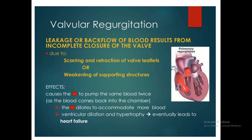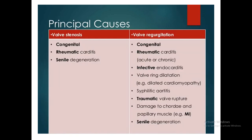Both stenosis and regurgitation can cause effects on the heart and from the heart to the whole body. The principal causes of stenosis are congenital defects, rheumatic carditis, and senile degeneration. As for valvular regurgitation, causes include rheumatic carditis, congenital defects, infective endocarditis, valve ring dilatation due to dilated cardiomyopathy, syphilitic aortitis, traumatic valve rupture, damage to the chordae tendineae or papillary muscles, and myocardial infarction causing papillary muscle infarction, and senile degeneration.